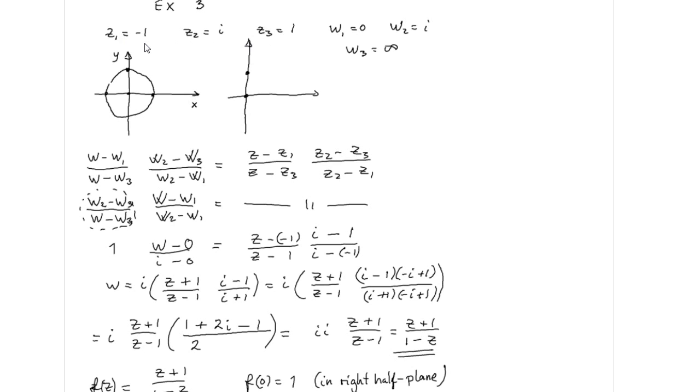So we have three points here: z1 equal to minus 1, z2 equal to i, and z3 equal to 1 here.